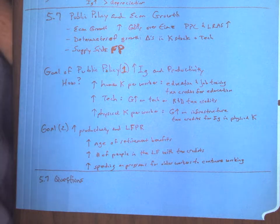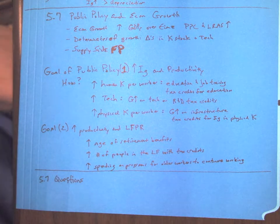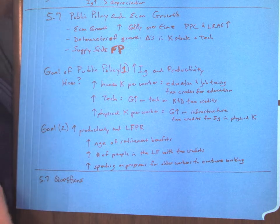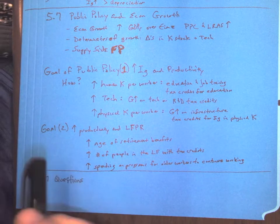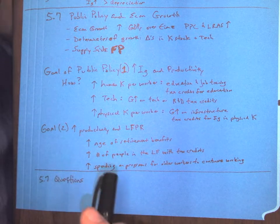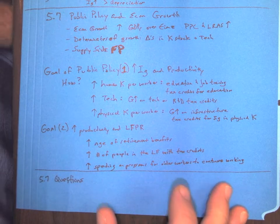Lesson 5.7 of AP Macro is about public policy and economic growth. Public policy is going to be monetary policy, fiscal policy, things that our lawmakers would like to establish when it comes to making the economy better.